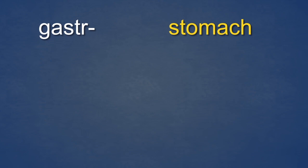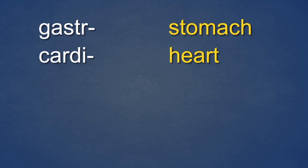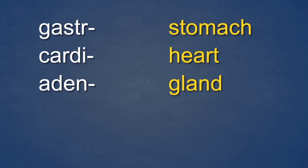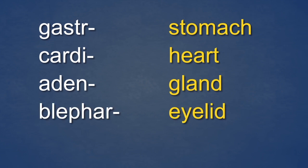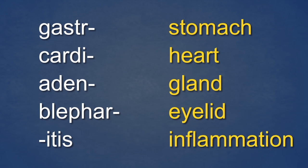Let's review the five elements you have just seen. Gaster sounds like gas truck and it means stomach. Cardi sounds like cards and it means heart. Aden sounds like a den and it means gland. Blefar sounds like blue fur and it means eyelid. Itis sounds like 'I test, inflames' and it means inflammation.